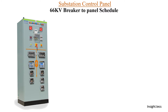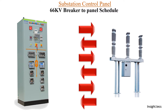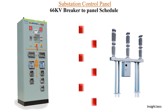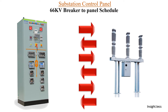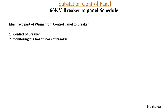We have already discussed what is a breaker to panel schedule. Basically, the wiring done between the circuit breaker and the panel is called the wiring schedule. We have also seen the requirement of making the schedule and why it is required. We considered the two main parts of this wiring schedule: first is the control of the breaker, covered in part one, and second is monitoring the healthiness of the breaker, covered in part two. We are going to cover the same topic in this video as well.